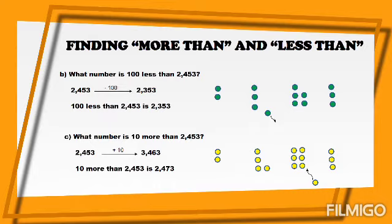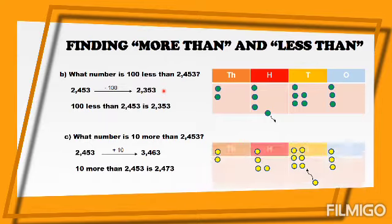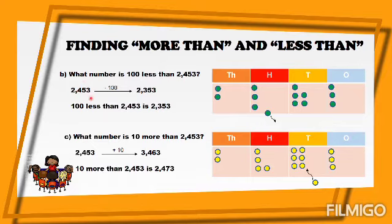Continuing with finding more than and less than — Letter B. The question is: what number is one hundred less than two thousand four hundred fifty-three? The key word here is 'less.' Take note: less means minus. We have an arrow from this number indicating minus one hundred.